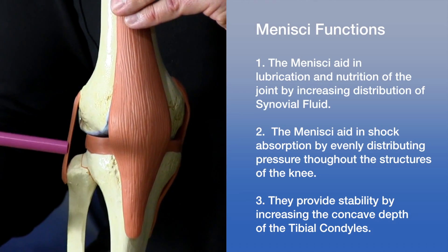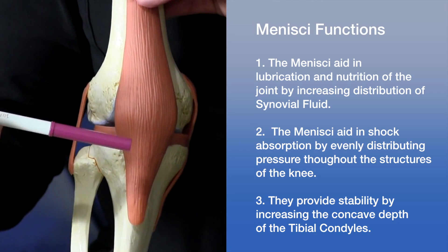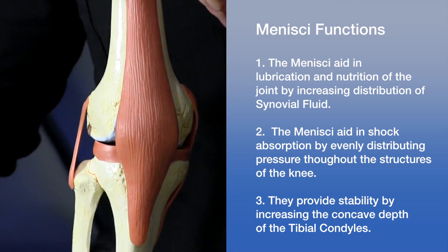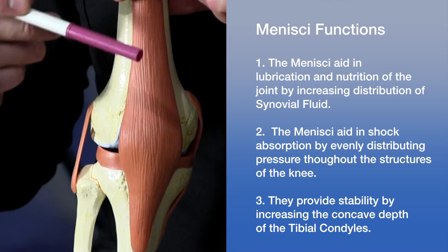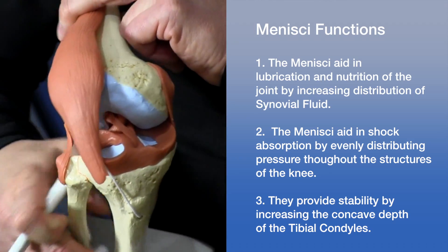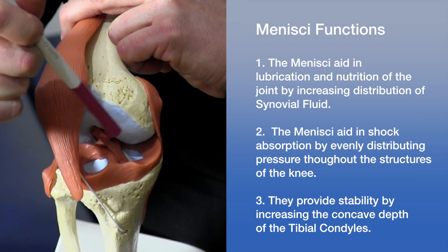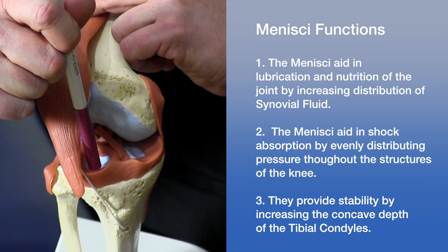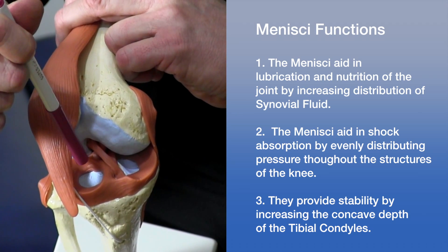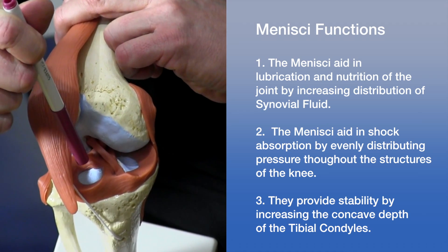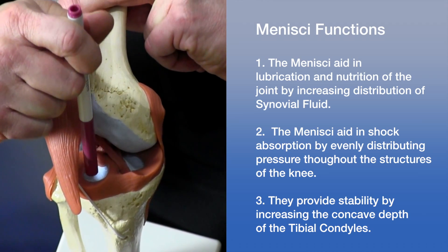Speaking about meniscal functions, they increase the distribution of synovial fluid — the capsule surrounding the entire knee contains synovial fluid that acts as a lubricant for better gliding. The menisci also act for shock absorption, increase the weight-bearing surface resulting in better distribution of pressure, and act as wedges which increase the concave shape of the tibial condyles, helping to provide better stability.